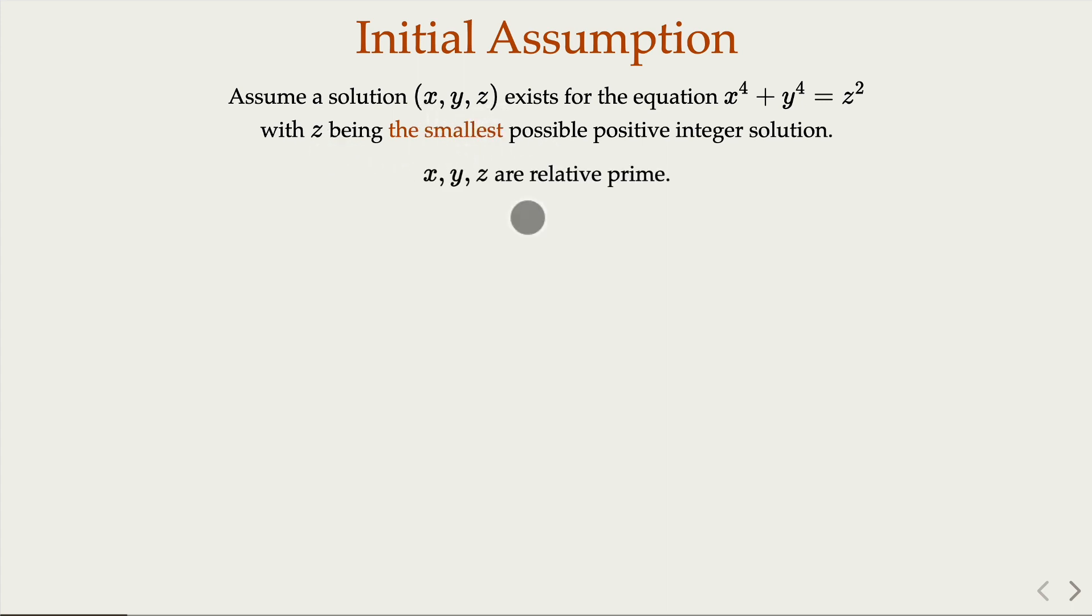We can assume x, y, z must be relatively prime. Why? Because z is the smallest. If not, if there is a common factor p, where p is a prime factor greater than 1, then if you plug in this into the equation, you cancel p squared, then p is prime, and z here must be a multiple of p again.